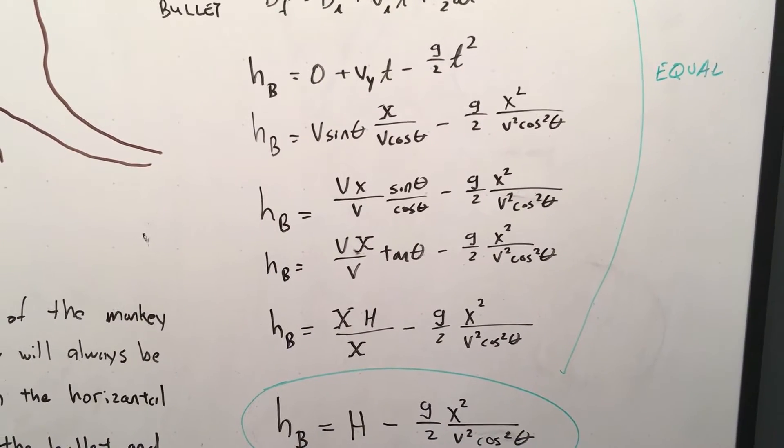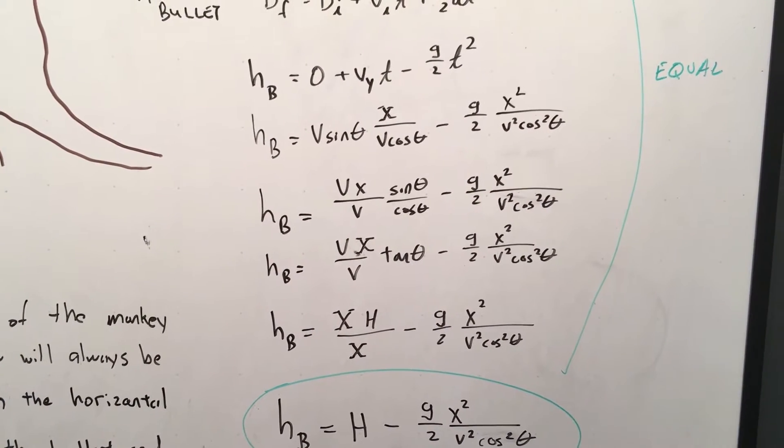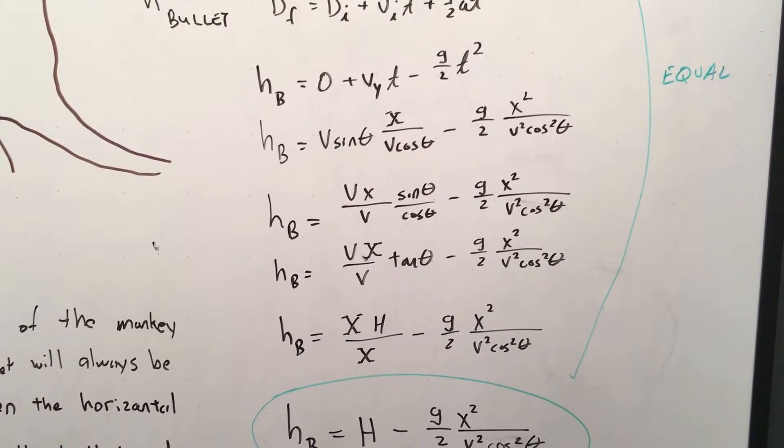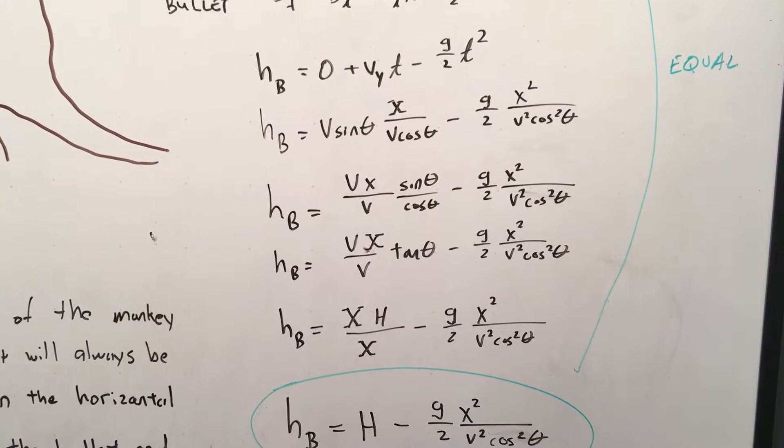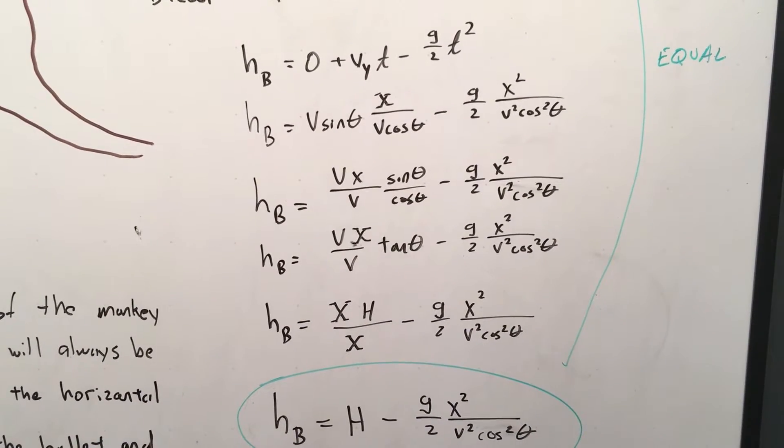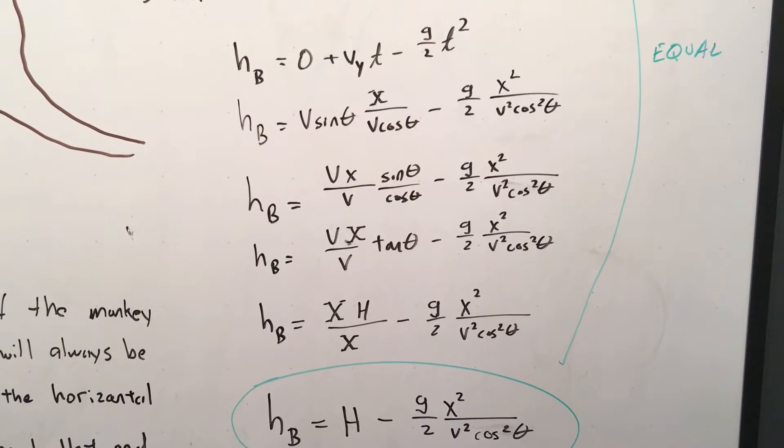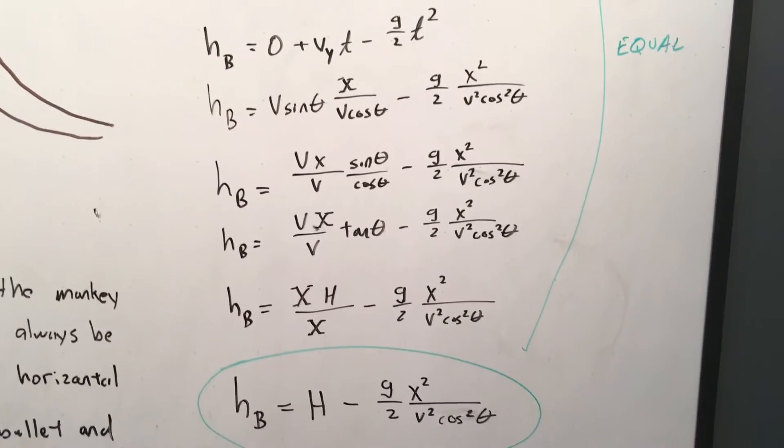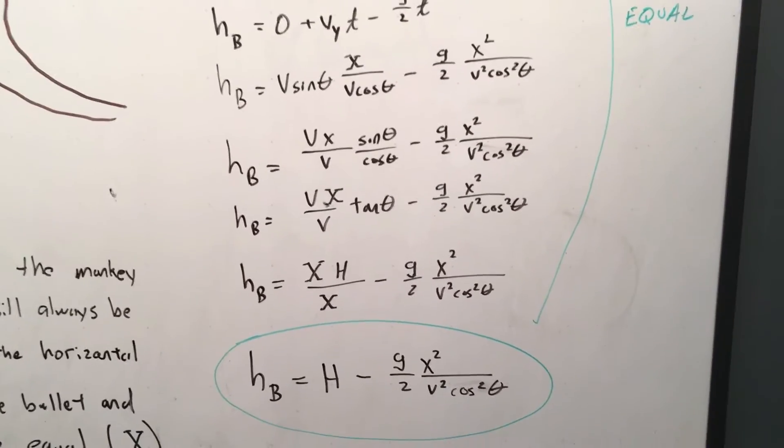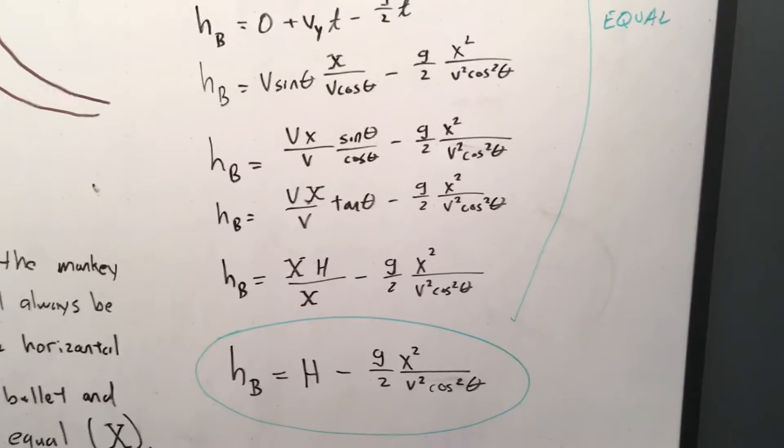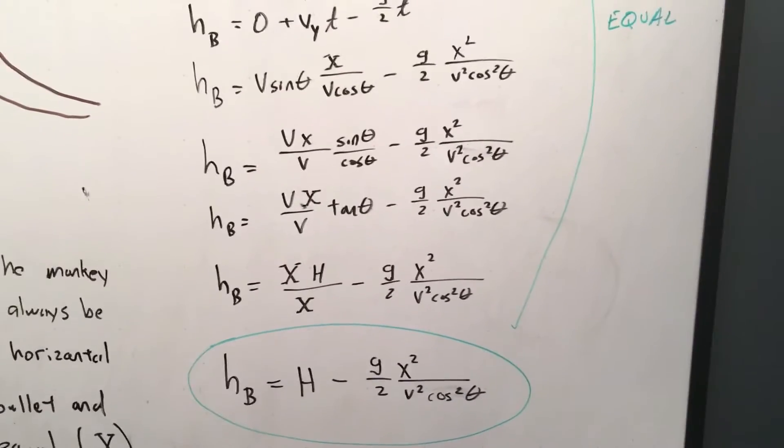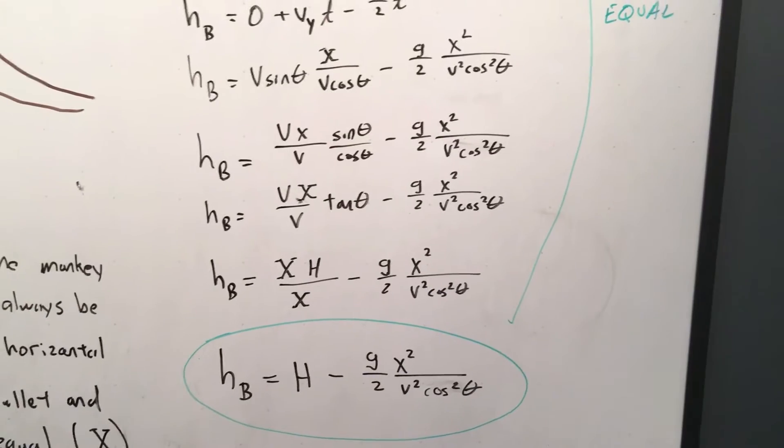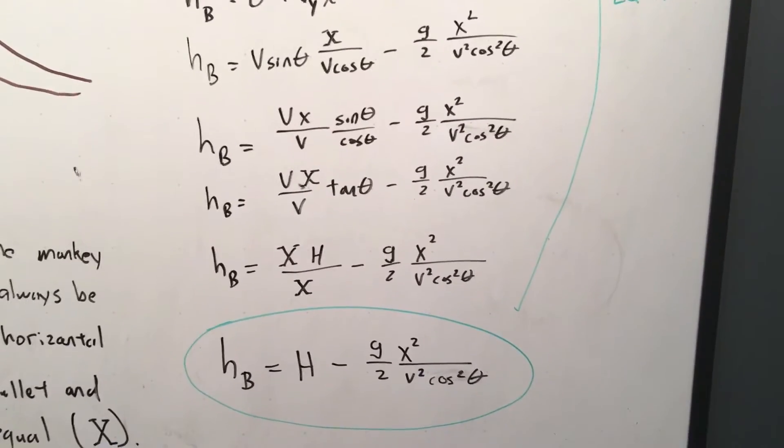So when you start rearranging terms, you basically get V times X over V times sine theta over cosine theta. The V's cancel out. Sine theta over cosine theta is tan theta, which if you go back, tan theta is just H over X. So your equation becomes height of the bullet is X times H over X minus g over 2 X squared over V squared cosine squared theta.